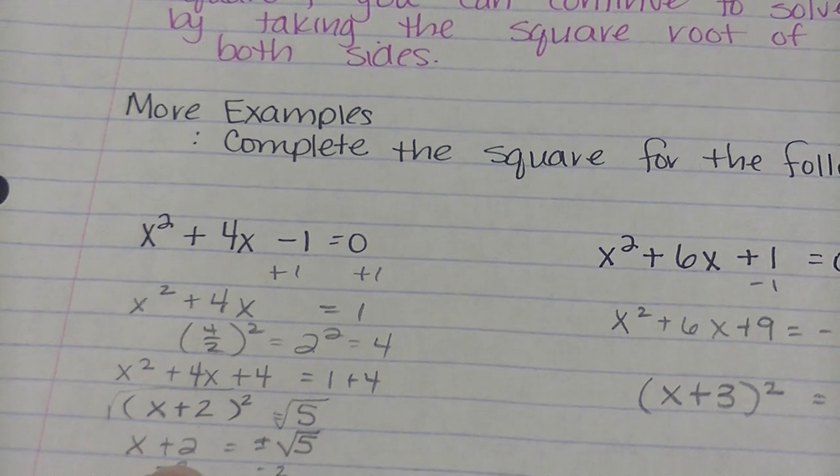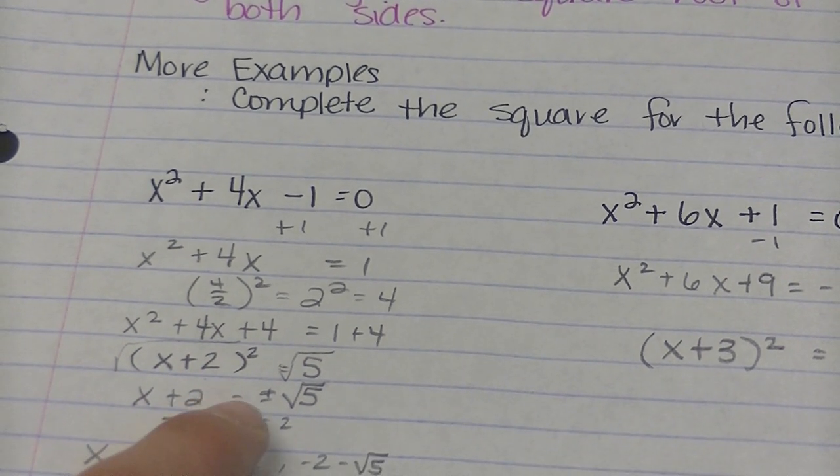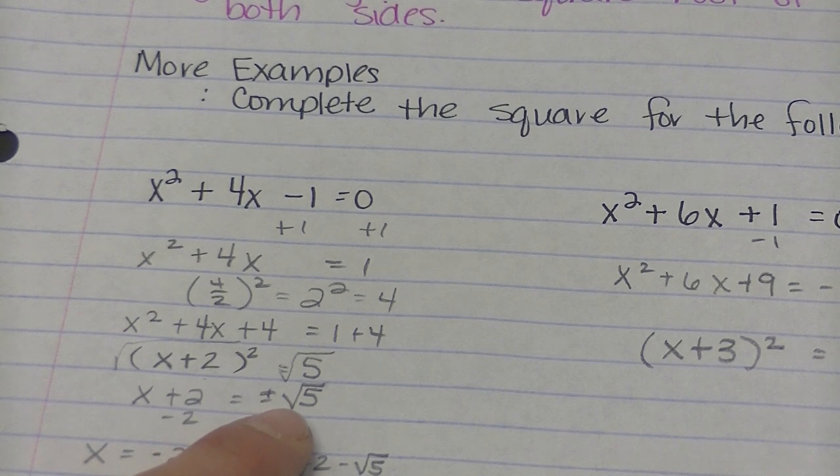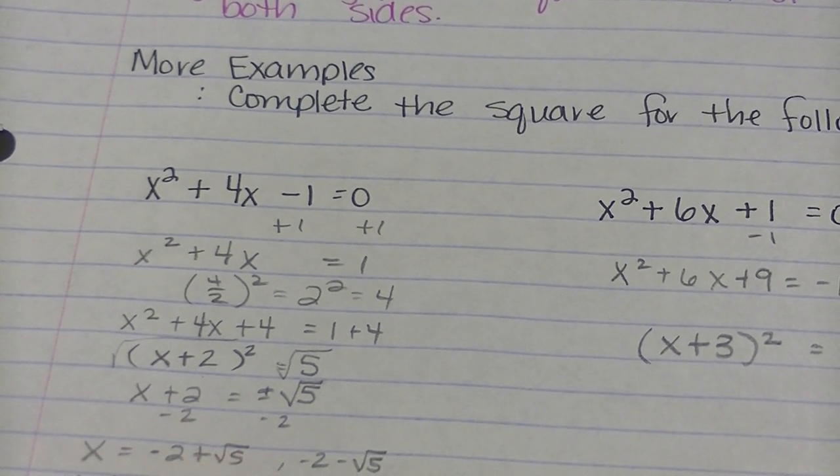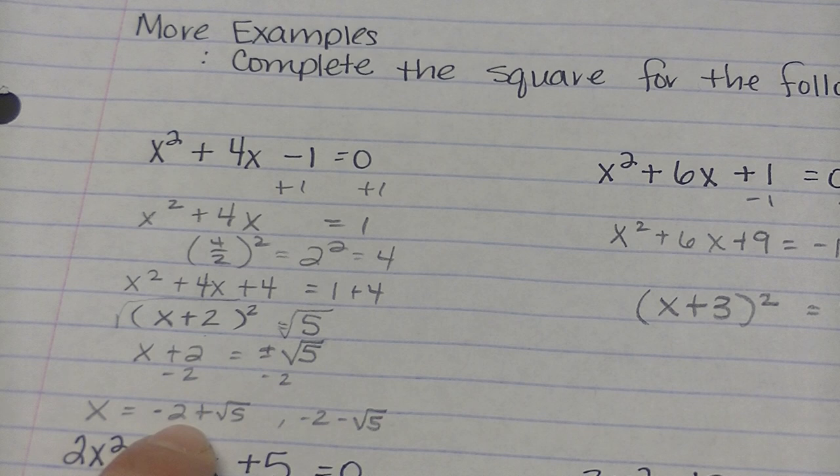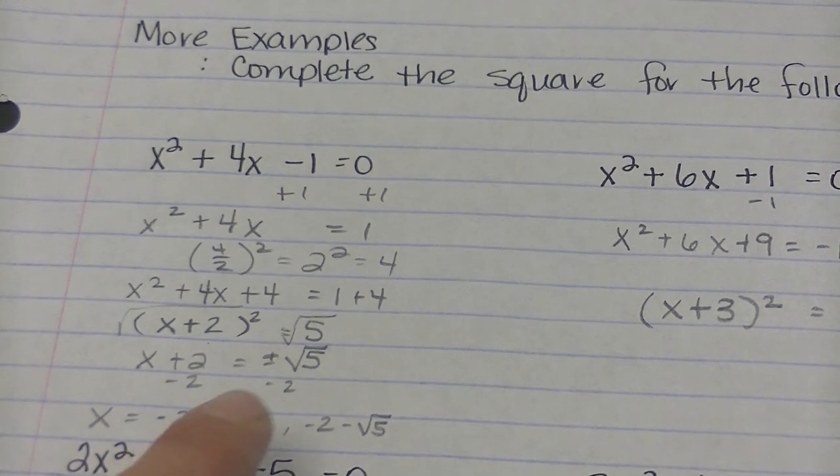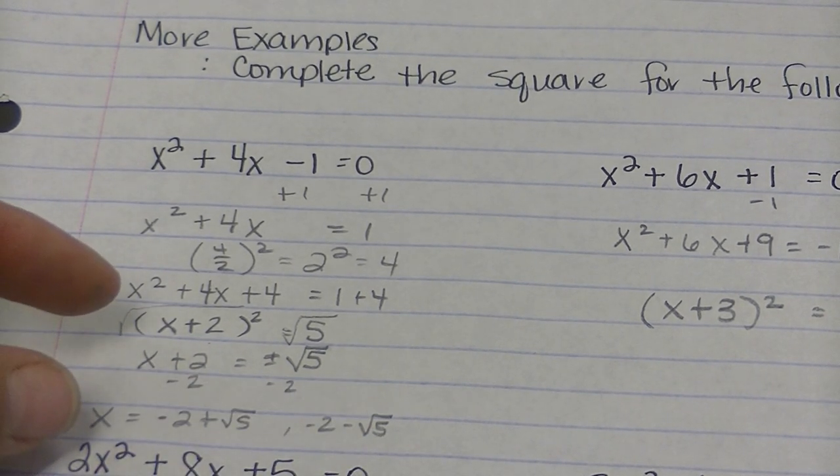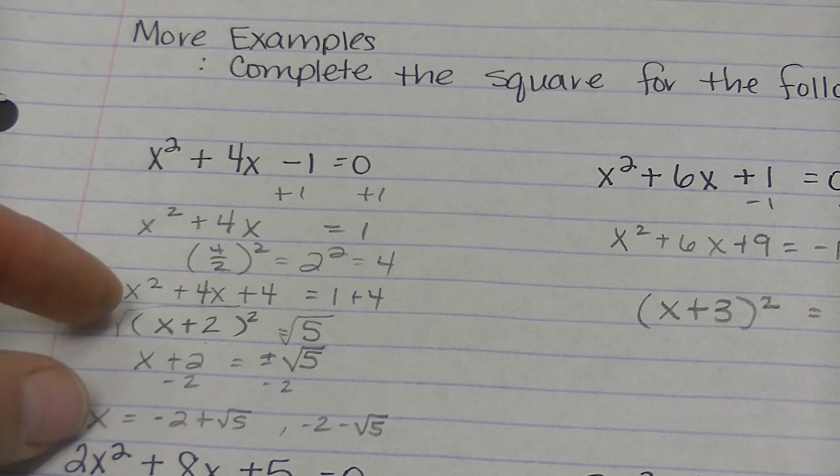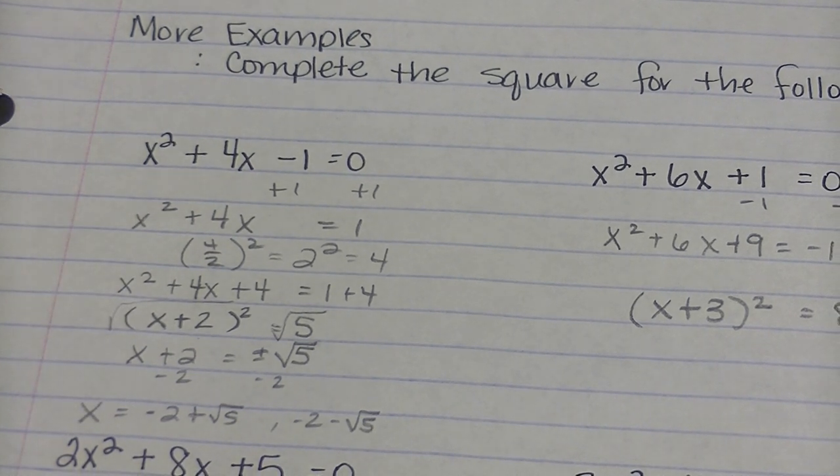And I went ahead and took the square root of both sides to start solving. So x plus 2 equals plus or minus the square root of 5. Subtract 2 from both sides. And x equals negative 2 plus the square root of 5 or negative 2 minus the square root of 5. Starting here, that was just a matter of solving by taking the square root.